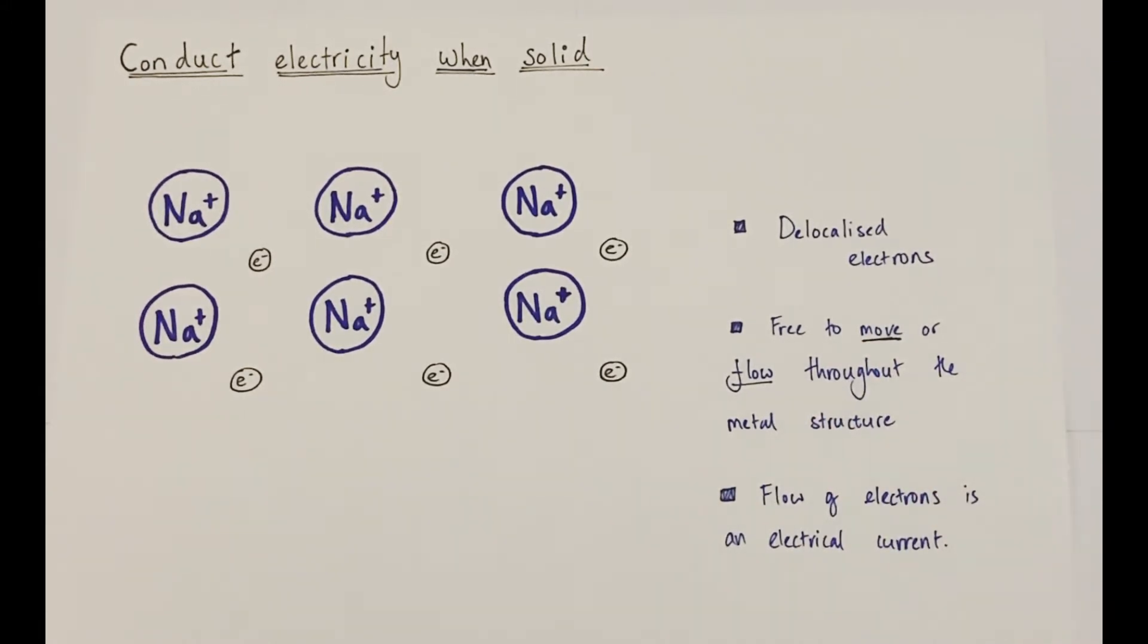And from physics 101, we know that the flow of electrons is what is known as an electrical current. And if they're all flowing in the same direction, we have a wire conducting a current, for example. So metals can conduct electricity because they have delocalized electrons which are free to move or flow throughout the metal structure. Really important to emphasize that it's the movement of the delocalized electrons which is creating the electrical current.